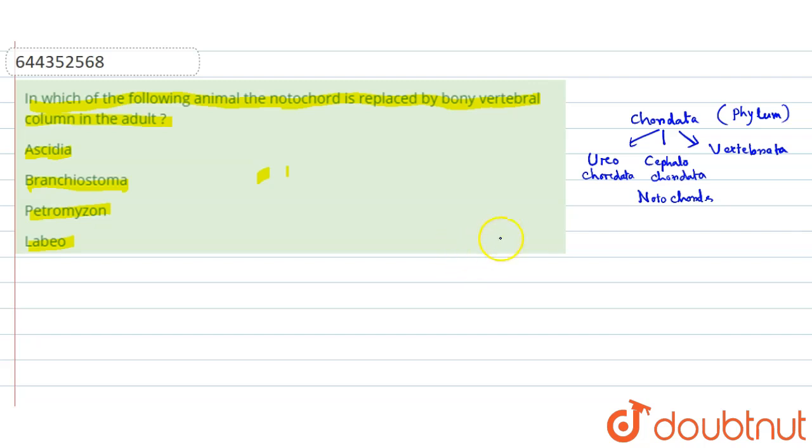Notochord is present, and after that it is replaced into cartilage or cartilaginous or bony vertebral column. In Urochordata and Cephalochordata, the notochord remains the same - it will not change. But in Vertebrata, this notochord will convert into or be replaced by a cartilaginous or bony vertebral column.